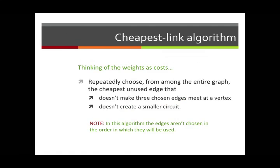Finally, we come to the cheapest link algorithm. This is the one that students find hardest to master. We think of the weights here as costs. What you do in this algorithm is repeatedly choose from among the entire graph the cheapest unused edge that satisfies a couple of conditions. To begin, you look over the entire graph and pick the cheapest edge — that is, the edge of least weight, wherever it may happen to be. Then you choose the next one of least weight, not the one you already chose.